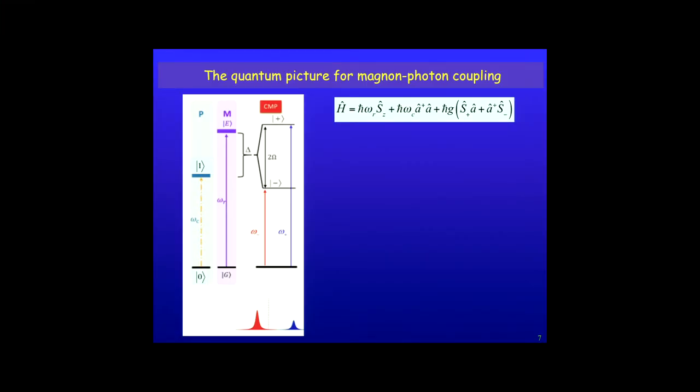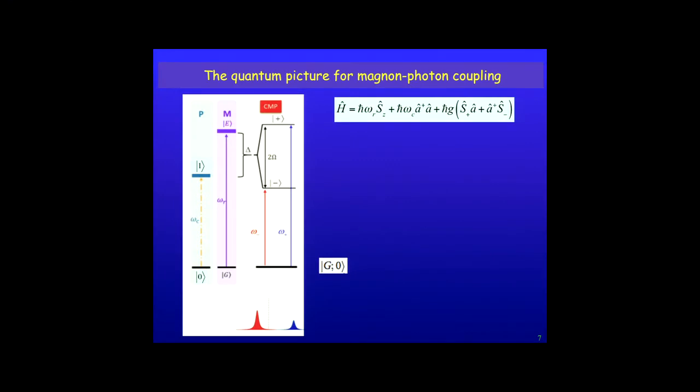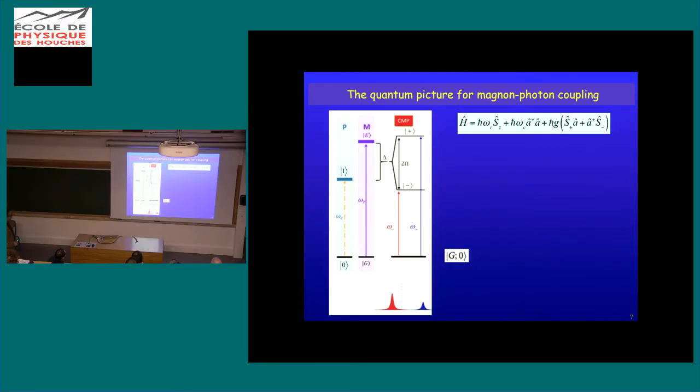Well, quantum mechanically, it's relatively simple to solve this kind of Hamiltonian where you involve many spins coupling with a single mode of the cavity. Essentially, you look at the Fock states of your photon and you look at these collective states of magnum, ground states, excited states. That is what we call as the ferromagnetic resonance.